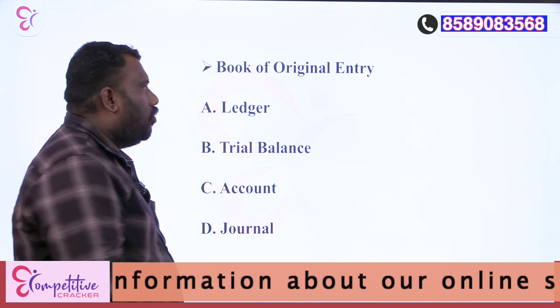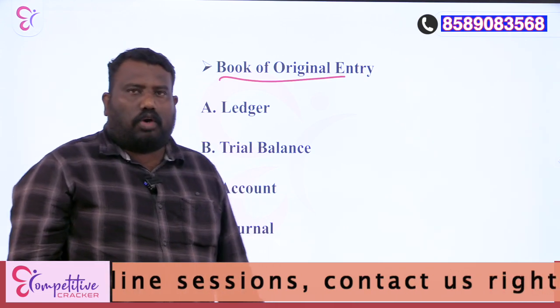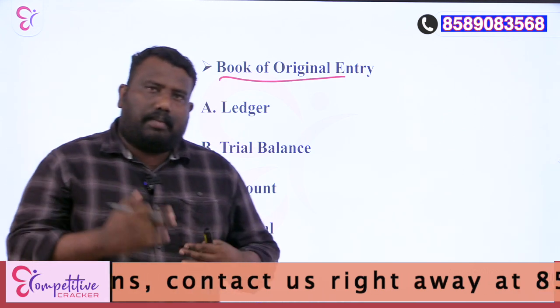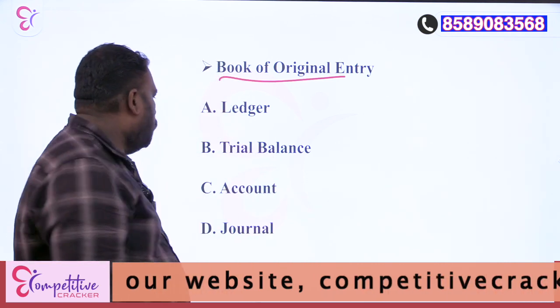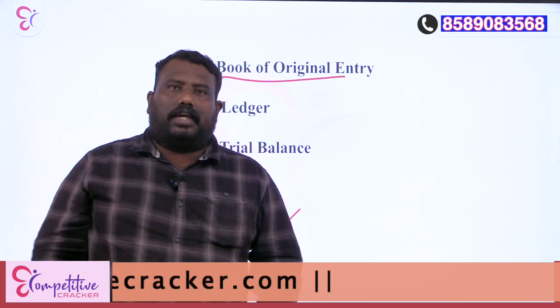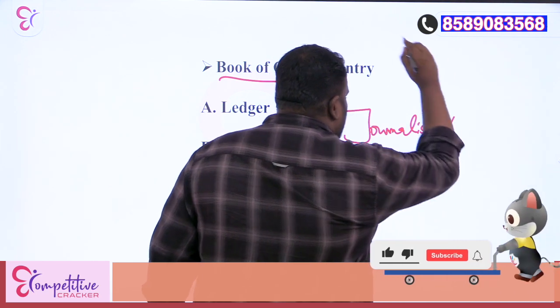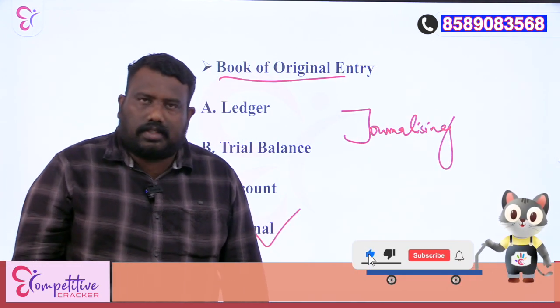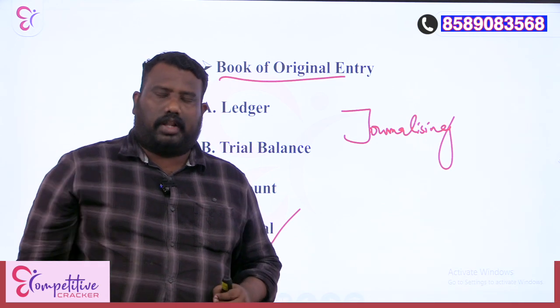Next question: Book of Original Entry. Option A: Ledger. Option B: Trial Balance. Option C: Account. Option D: Journal. If you have a book of original entry, it records entries from source documents. The first record is in Option D, Journal, in chronological order. This process is called journalizing.